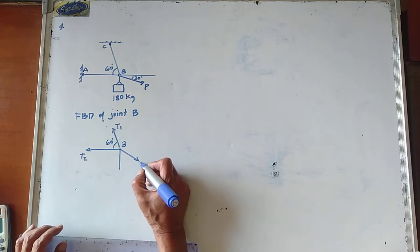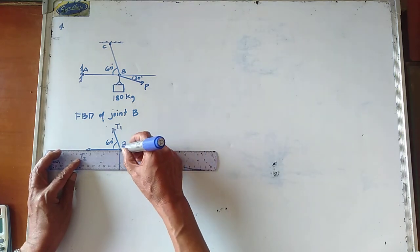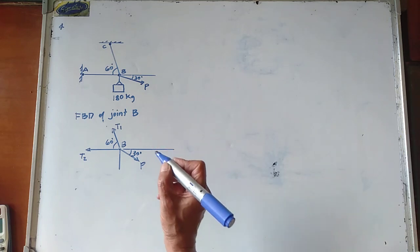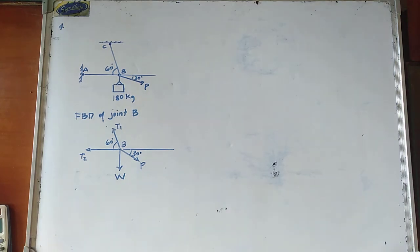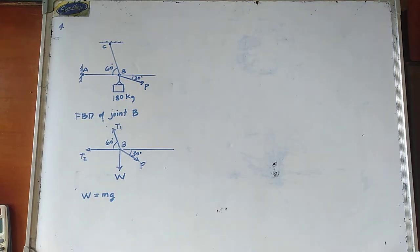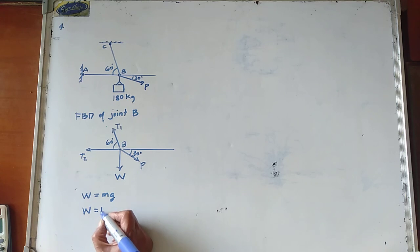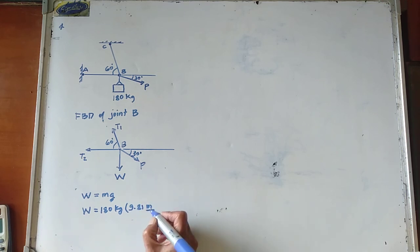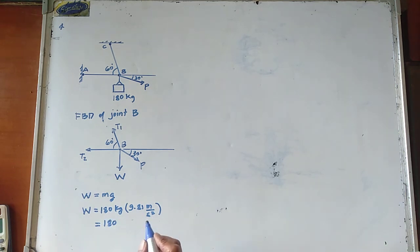T1 makes an angle of 60 degrees with the horizontal. P makes an angle of 30 degrees with the horizontal. Now we have the weight W, equal to mass multiplied by gravitational acceleration. So we have weight equal to 180 kilograms multiplied by 9.81 meters per second squared, which equals 180 kilogram·meters per second squared.